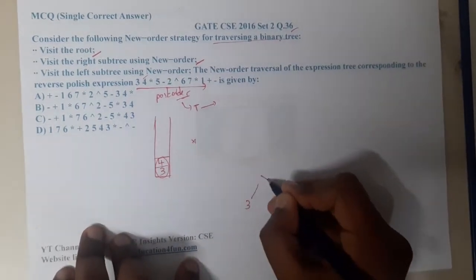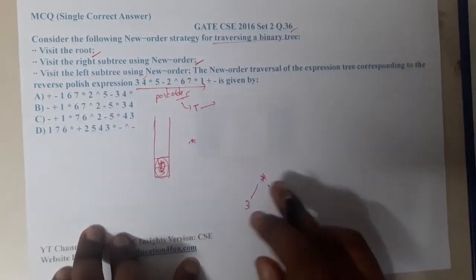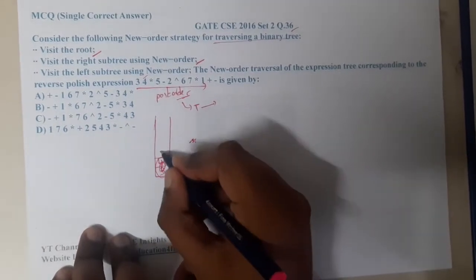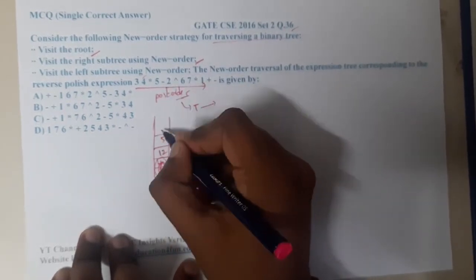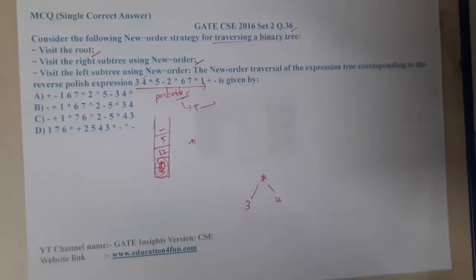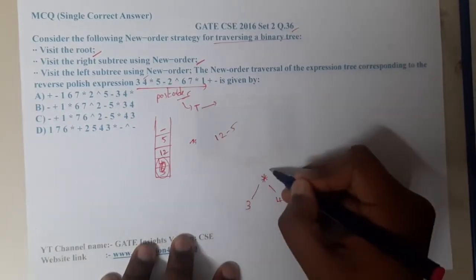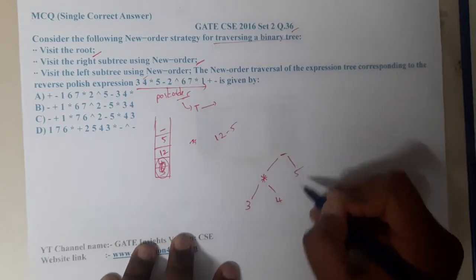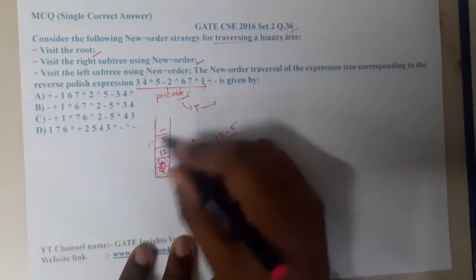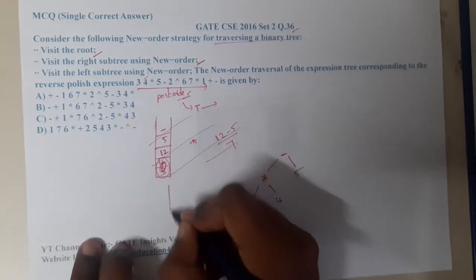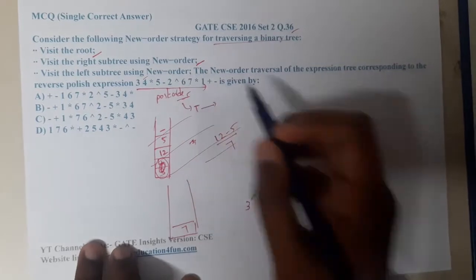So now 3 into 4 is done. So what we will be getting will be getting 12. So now after 12, 5 came. After 5, minus came. So now where will this minus come? So it is nothing but 12 minus 5. So this result minus 5 we need to do. What will be the result? That is nothing but 7.